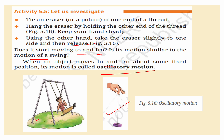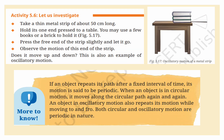A boy swinging is an example of oscillatory motion. Let us do another activity: take a thin metal strip about 50 cm long and hold one end pressed to a table using books or a brick. Press the free end slightly and let it go. Observe the motion — does it move up and down? Yes. This is also an example of oscillatory motion.